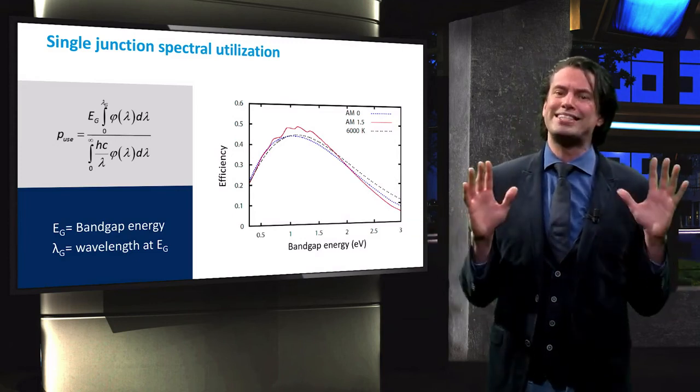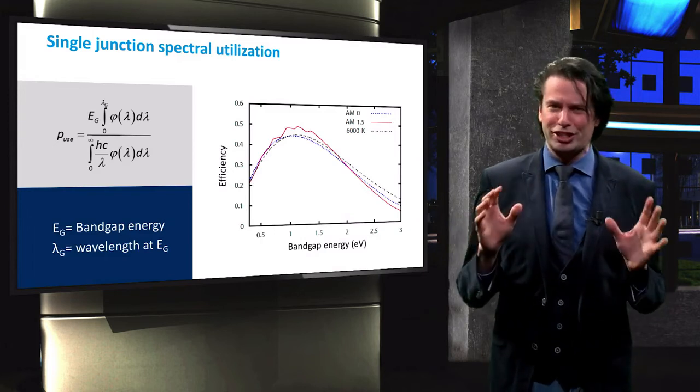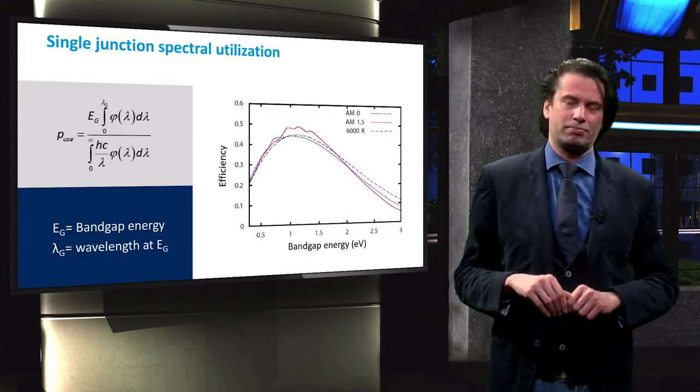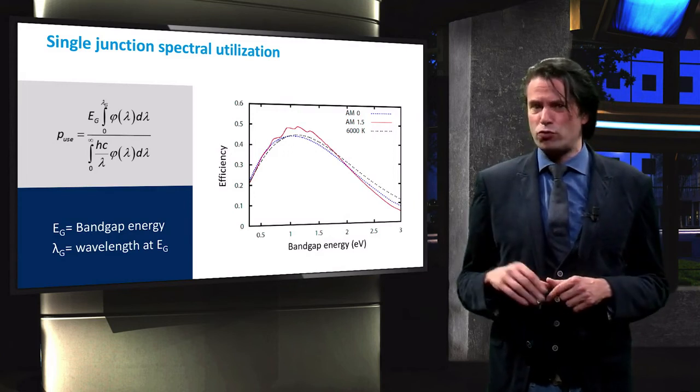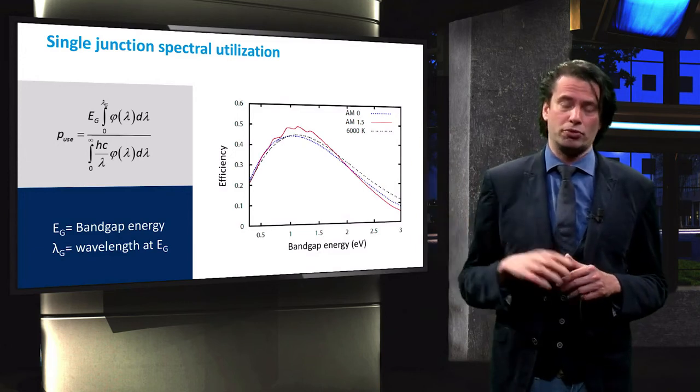Just another reason why silicon, with its band gap of 1.12 eV, is of such interest to photovoltaics. Gallium arsenide having a band gap of 1.4 eV has a high conversion potential as well as shown in this figure.